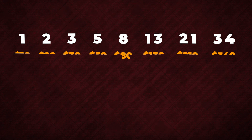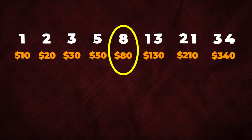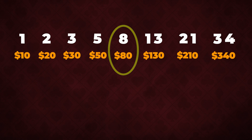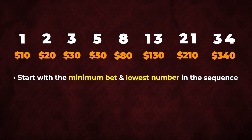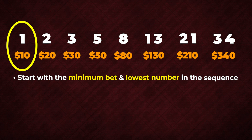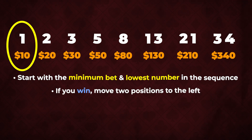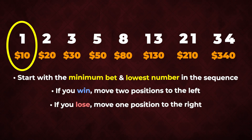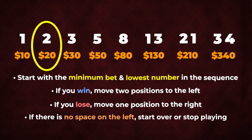Each number works as a multiplier for your initial wager. So if you start on a $10 bet and your sequence is 8, your bet will be $80. In a nutshell, this strategy instructs you to decide the amount of the bet and start with the lowest number in the sequence. If you win, move two positions to the left. If you lose, move one position to the right. Then repeat this process until you're out of the sequence from the left-hand side.